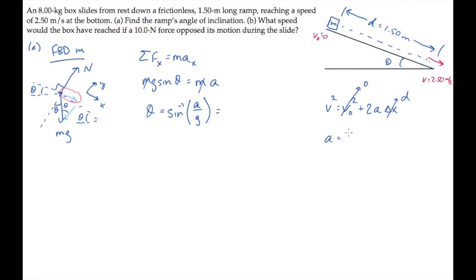So its acceleration is v-squared, the final velocity squared, divided by 2d. Substitute values to find that its acceleration is 2.08 meters per second squared as it slides down the ramp.